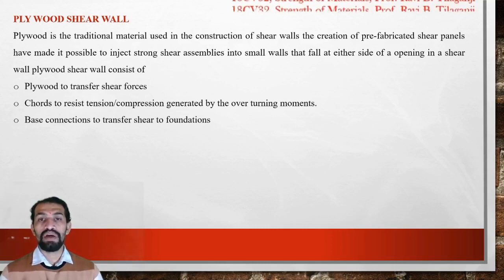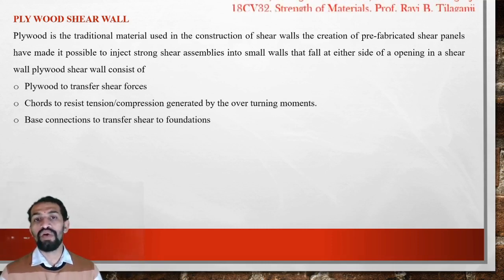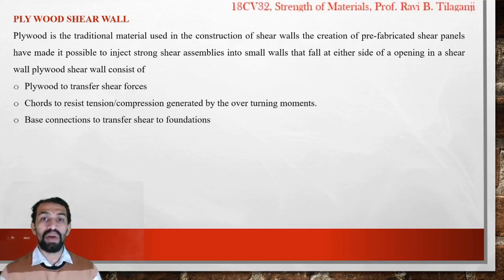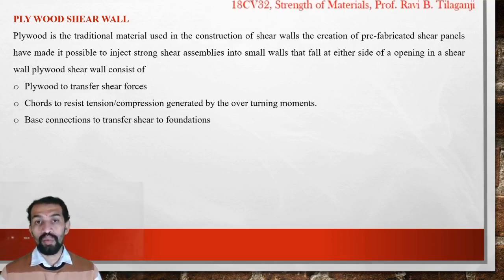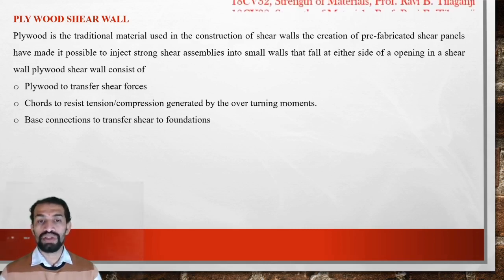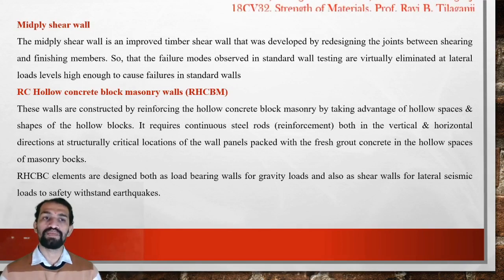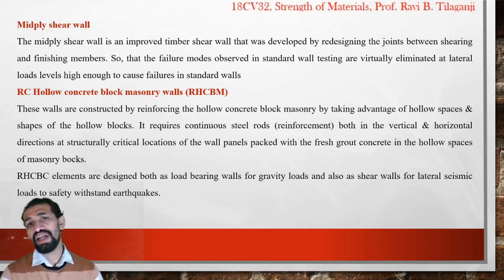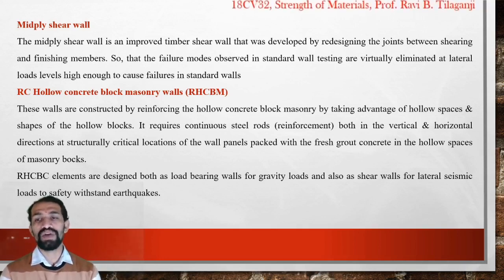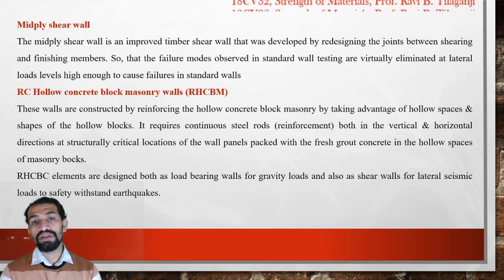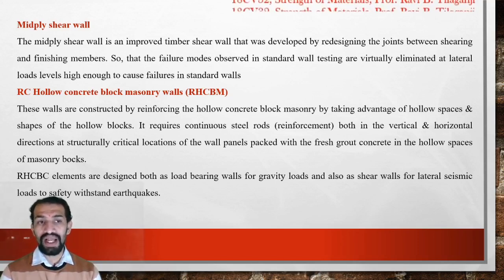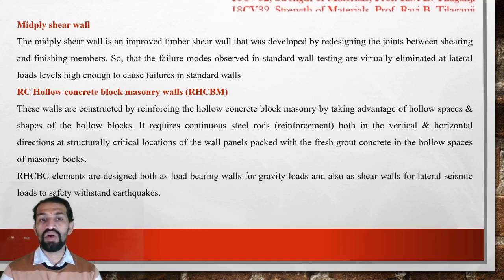We have seen these shear walls where, for interiors, a plain wall is not used — instead the wall uses one more component of wood or plywood, taken as a shear wall. Cords resist tension, compression, and turning moments. Base connections and transfer of shear to foundations all come into account for plywood shear walls. Mid-ply shear wall is an improved timber developed by redesigning joints between shearing and finishing members so that failure modes observed in standard wall testing are virtually eliminated at lateral load levels high enough to cause failure in standard walls.